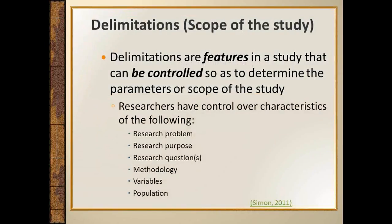Delimitations are just features in the study that can be controlled. You have control over them because you as a researcher try to define the boundaries of your study. Just think about the purpose of your research problem — you are able to define the problem that you really want to focus on. You are delimiting your study, drawing boundaries for it. With the purpose of your study, you have control over exactly what you want to do in your research.